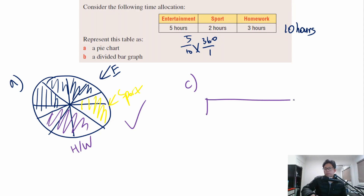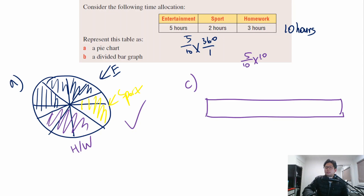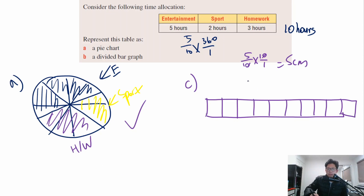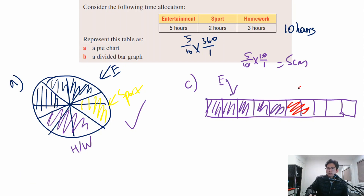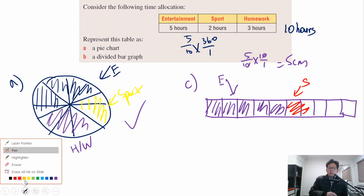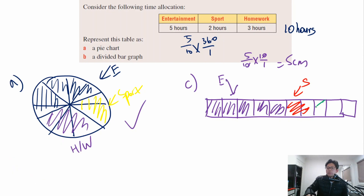For the divided bar graph, let's say it's 10 centimeters long again. For entertainment: 5 over 10 times 10 gives 5 centimeters. I'll draw 10 boxes. Entertainment takes up 5 boxes shaded blue, sport takes up 2 boxes shaded red, and homework takes up 3 boxes shaded green. If you got a bar chart that looks something like this, give yourself a tick.